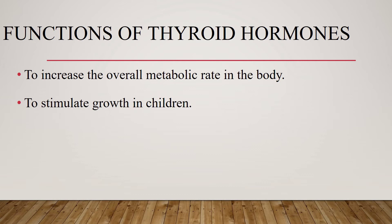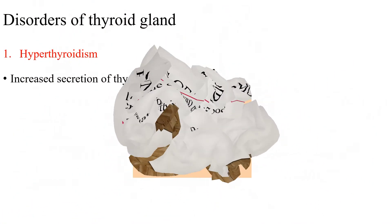Thyroid hormones are required to increase the overall metabolic rate in the body and stimulate growth in children. Thyroid hormones have general and specific effects on growth. Lack of thyroxine arrests growth, and increase in thyroxine secretion accelerates the growth of the body, especially in growing children. Thyroxine is more important to promote growth and development of the brain during fetal life and the first few years of postnatal life. Thyroxine is essential for maintaining the weight of the body. Increase in thyroxine secretion decreases the body weight and fat storage, and decrease in thyroxine secretion increases the body weight because of fat deposition.